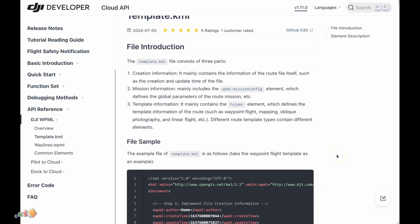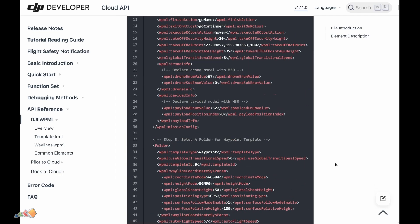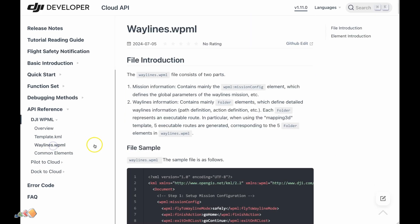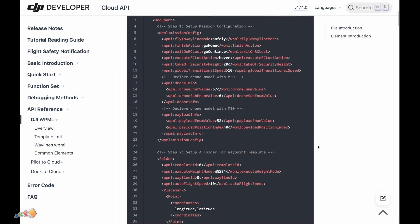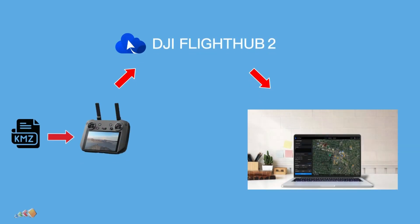Looking those up, these are pretty complicated files, and let's face it, I'm too lazy for that. Fortunately, Pilot 2 isn't as fussy about what it takes in, so a way to avoid all that messy markup coding stuff is to simply import the mission into Pilot 2 as you normally would, and then transfer that over to FlightHub 2 for editing.